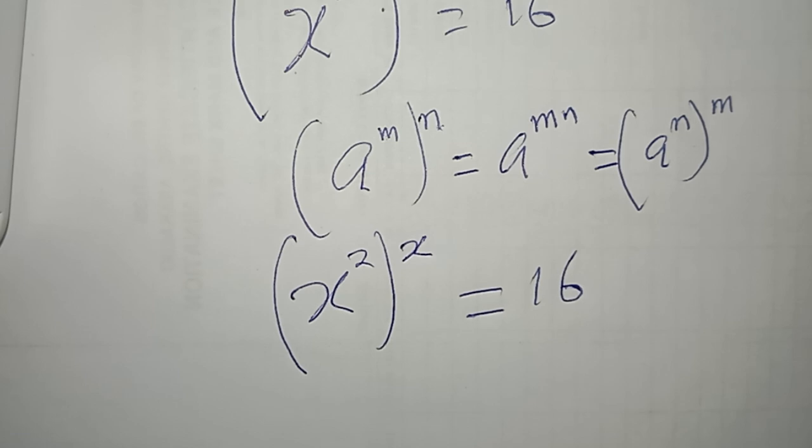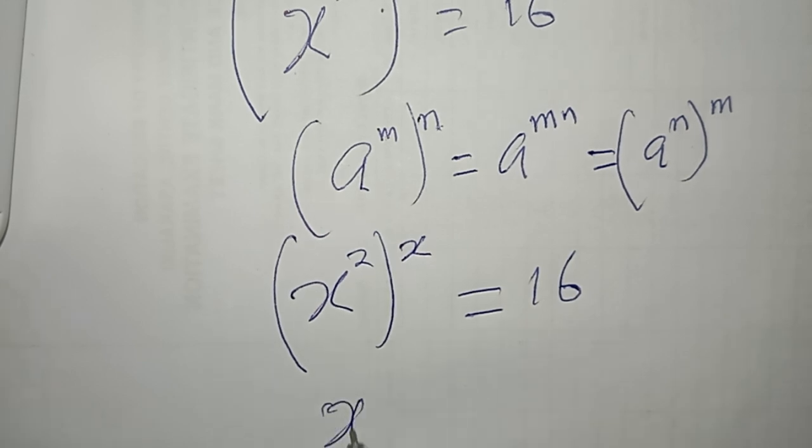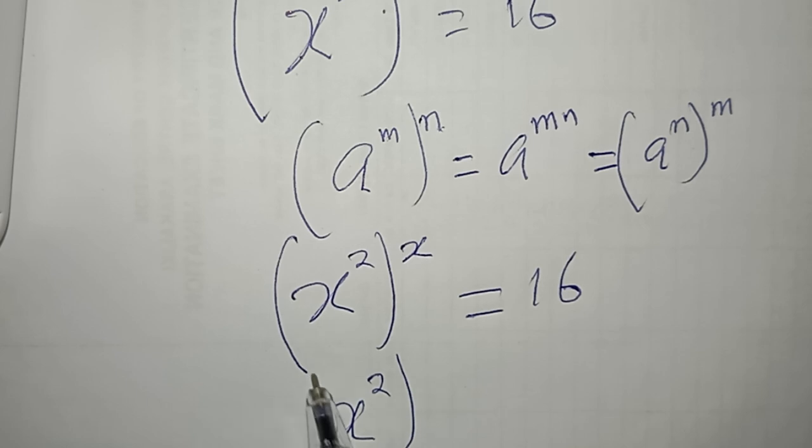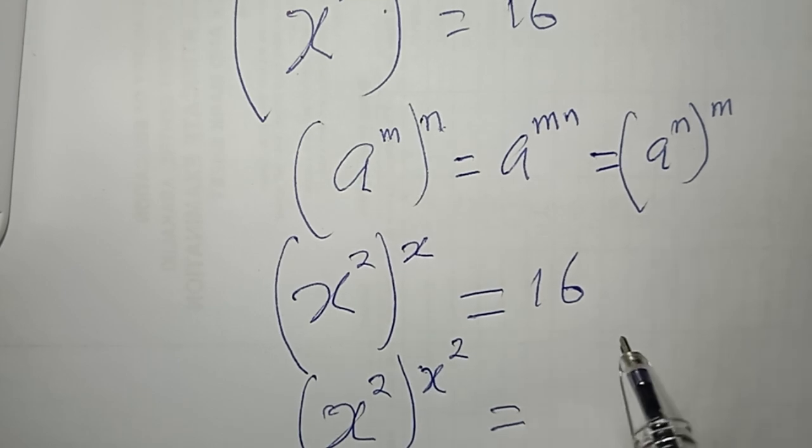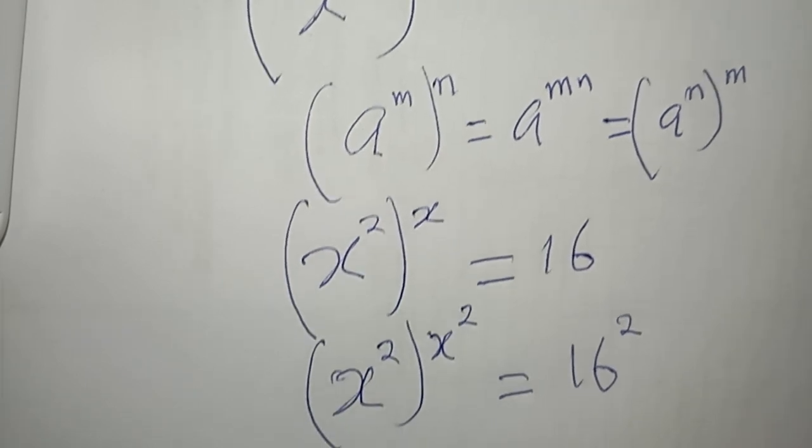Next, I'm actually going to raise both sides to power 2. So if I do that, I will be having x power 2, and then all raised to power x power 2. So I have that this is equal to 16^2.